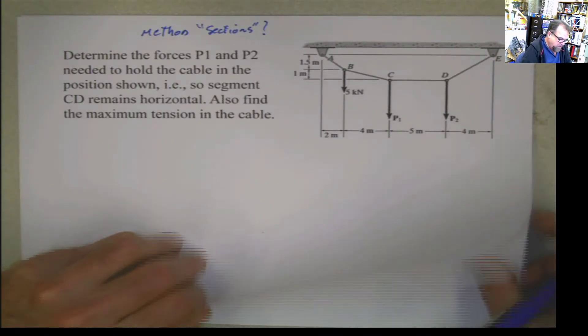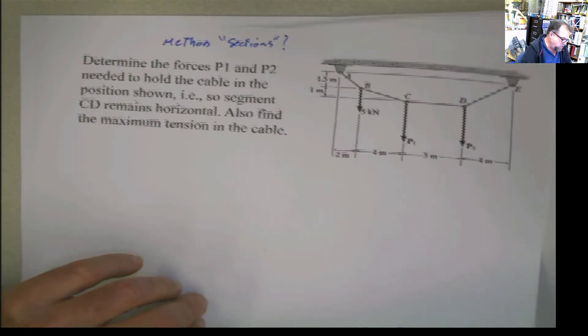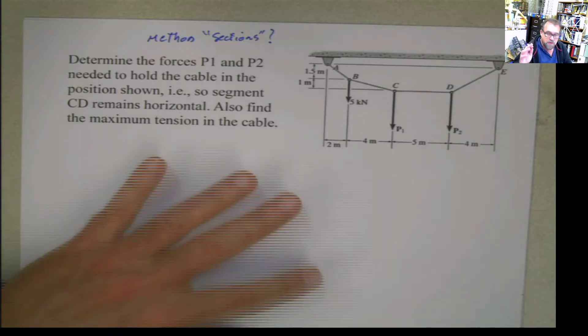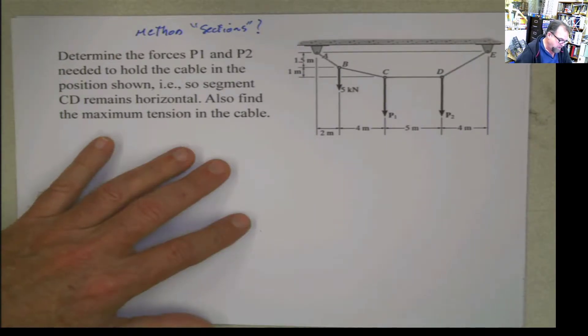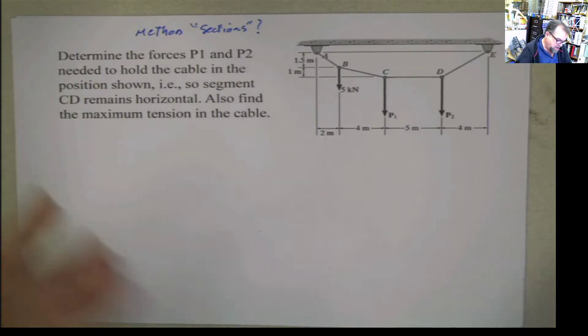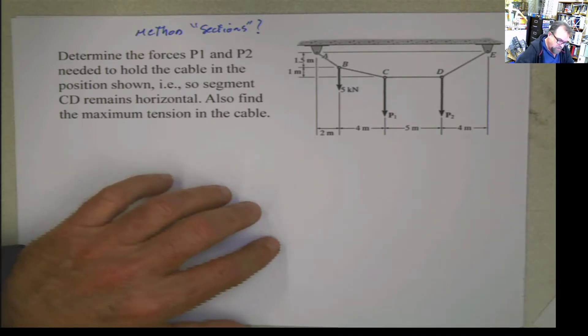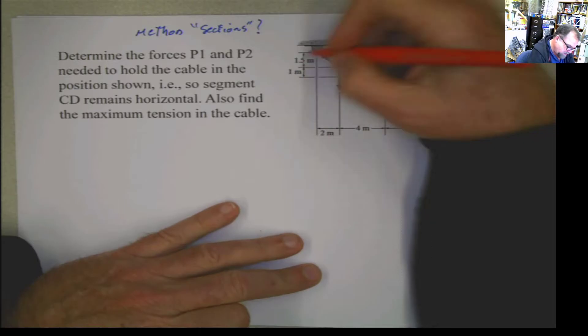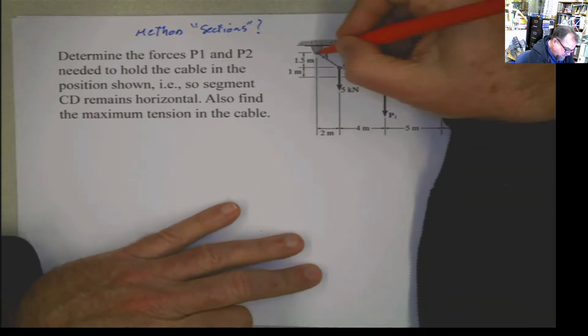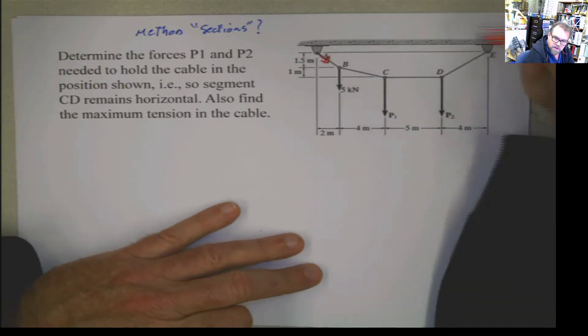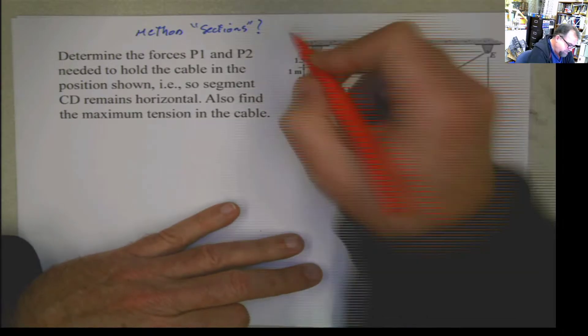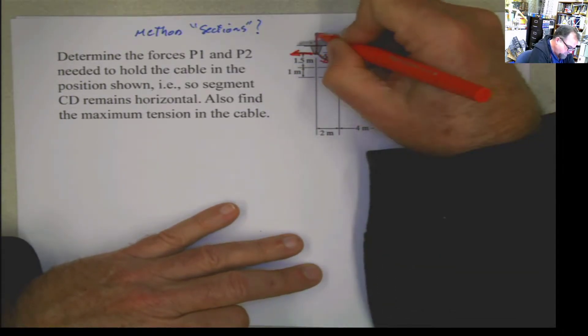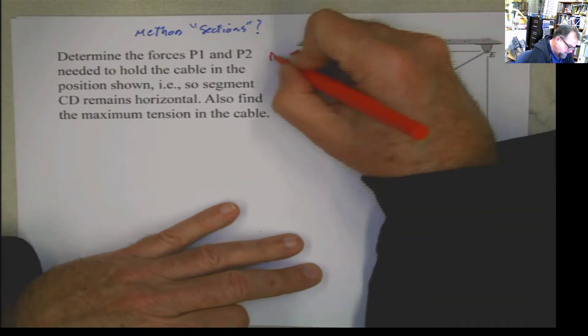Instead of going joint by joint and doing particle equilibrium, I'm going to do rigid body equilibrium. As you can see, one of the important things is that I know this is a pin, I know this is a cable. The cable is going to come in this direction, and the pin is going to have two reactions, AX and AY.